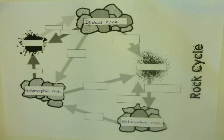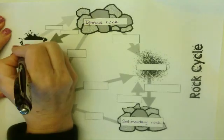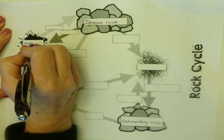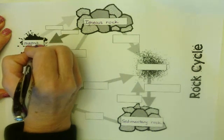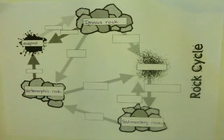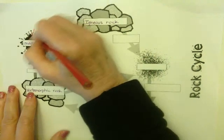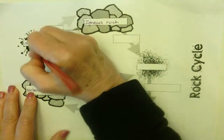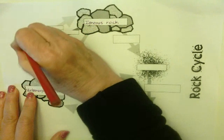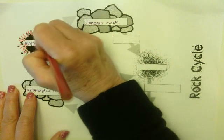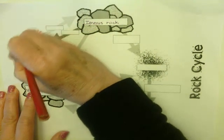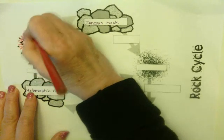Anytime you look at a rock cycle, the first thing you want to find is the magma. The magma happens to be this big splat shape. We're going to color it red using colored pencils to show that it is liquid rock — I am inside the volcano, I am magma.